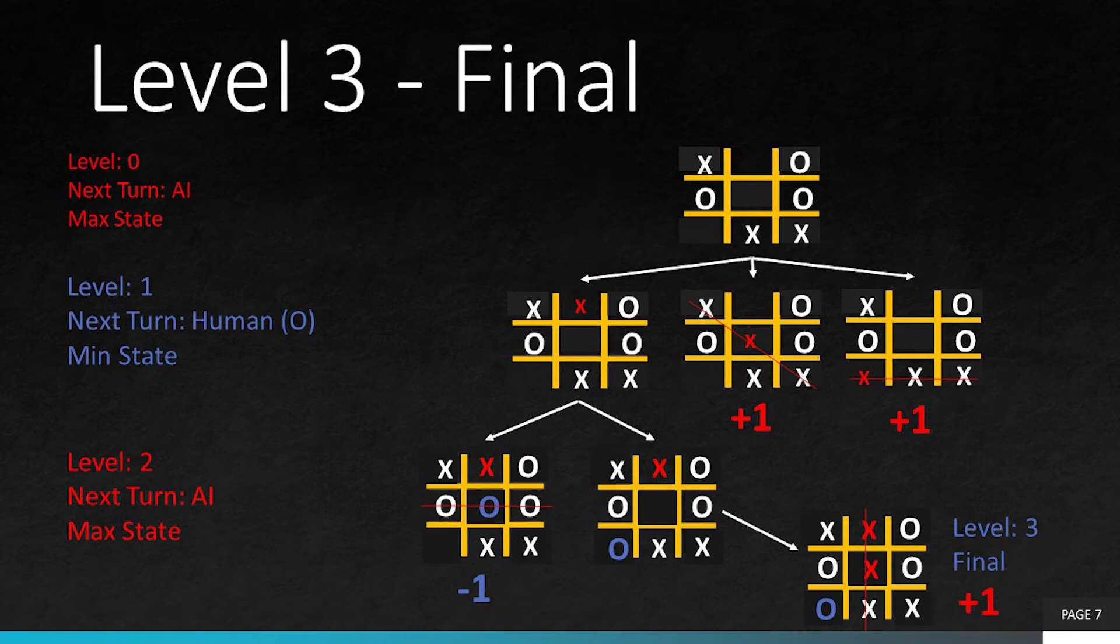This entire thing is our game tree. In the final level at level 3, there is a winner and that is the AI player and plus 1 value is assigned to it.